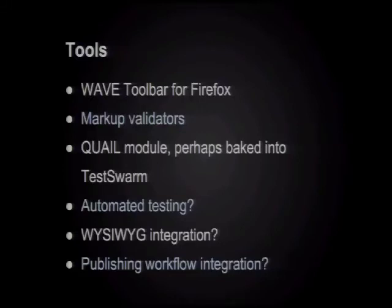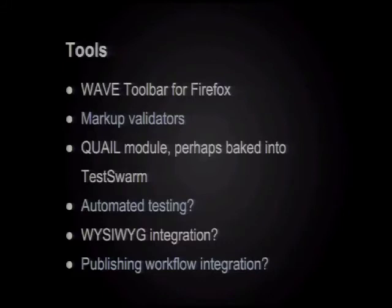Moving into the future, we might look at more automated means of doing testing. The Quail module — this is a JavaScript framework that does testing — I talked with Peter Drogmans about perhaps working this into the test swarm module, which we've begun developing front-end tests against. And then moving something like that perhaps into the test bot for testing patches as they're proposed. Another interesting tool for the content creation side would be WYSIWYG integration, letting authors know at the time of authoring that an image they've just added to the page is missing alt tags.